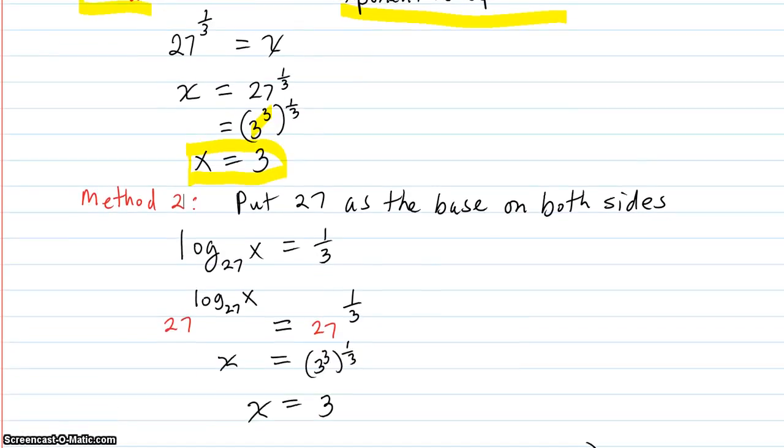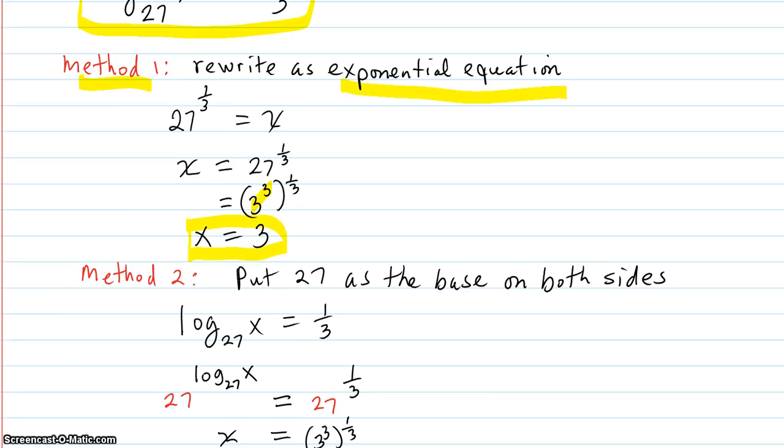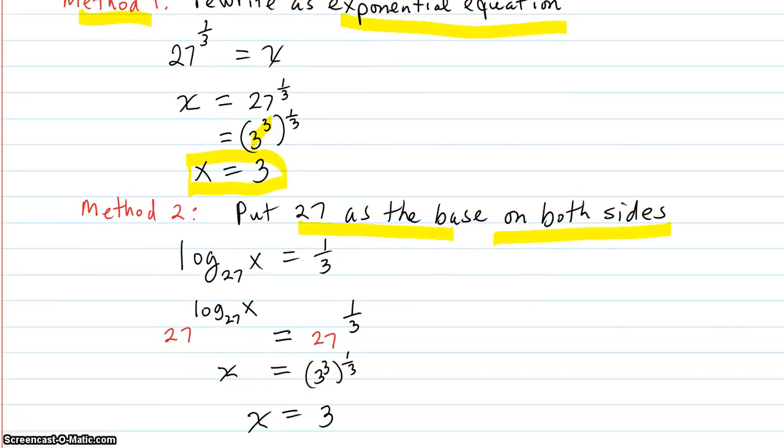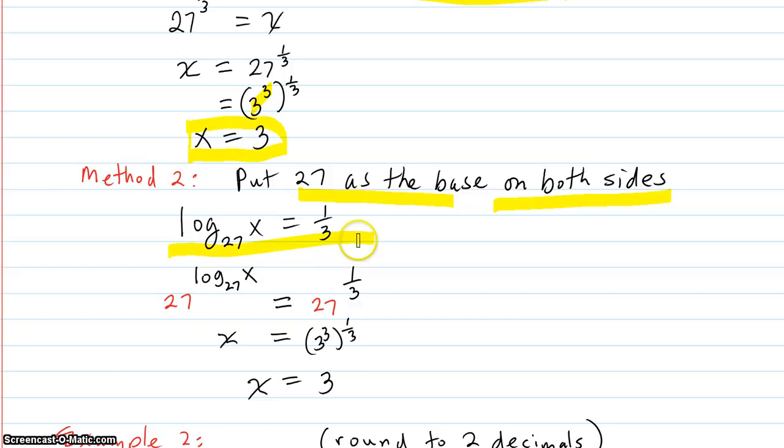Method 2. Put 27 as a base on both sides. Like this. Here's the original. So you put 27 as a base on both sides. That's certainly equal, as these two are equal.